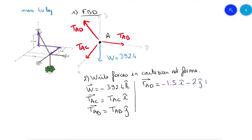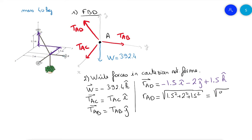Continuing the RAD vector: on z we are going up, so plus 1.5 k-hat. The vector RAD is complete. The magnitude of RAD is the square root of 1.5 squared plus 2 squared plus 1.5 squared, which equals the square root of 8.5. We can now write the unit vector UAD, which is the vector RAD divided by its magnitude.